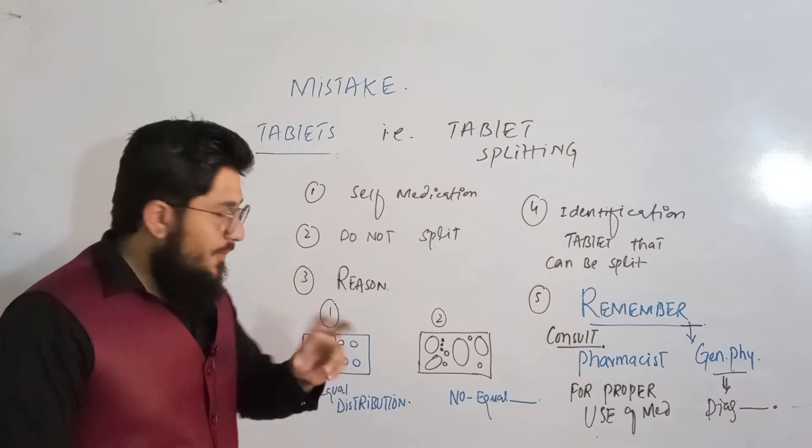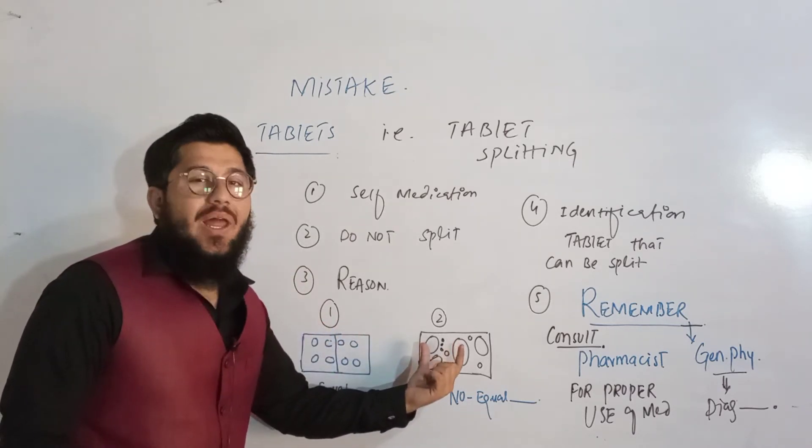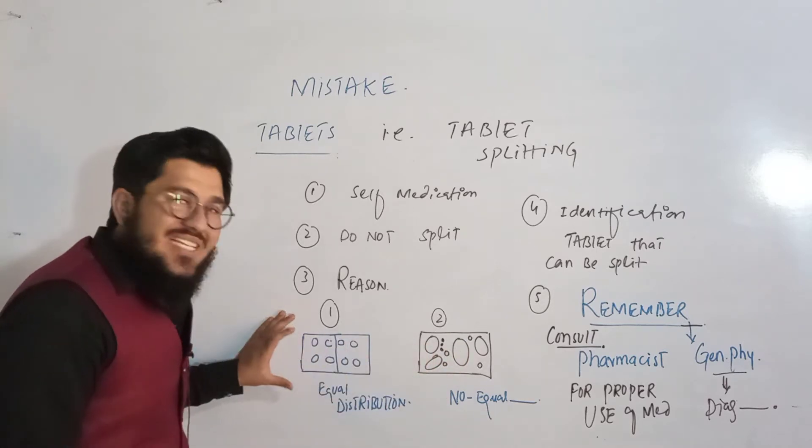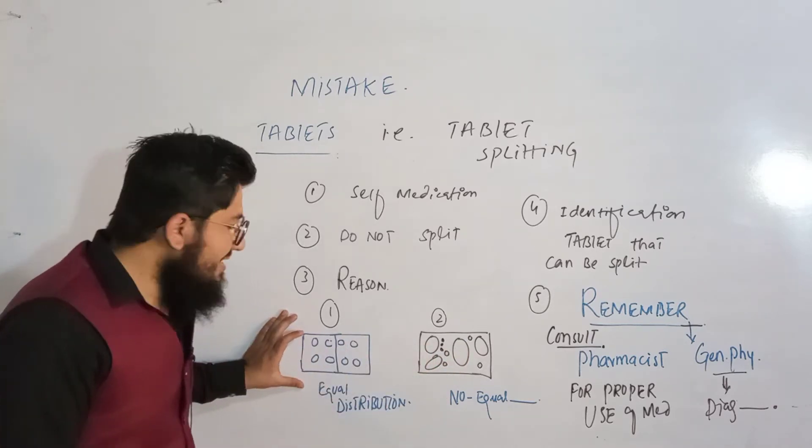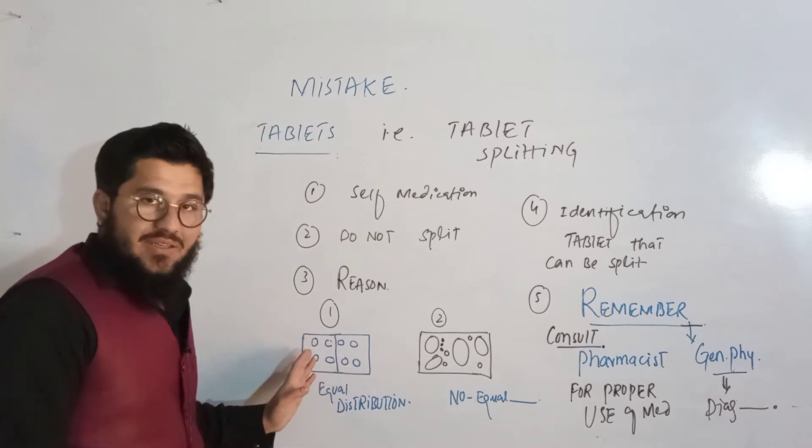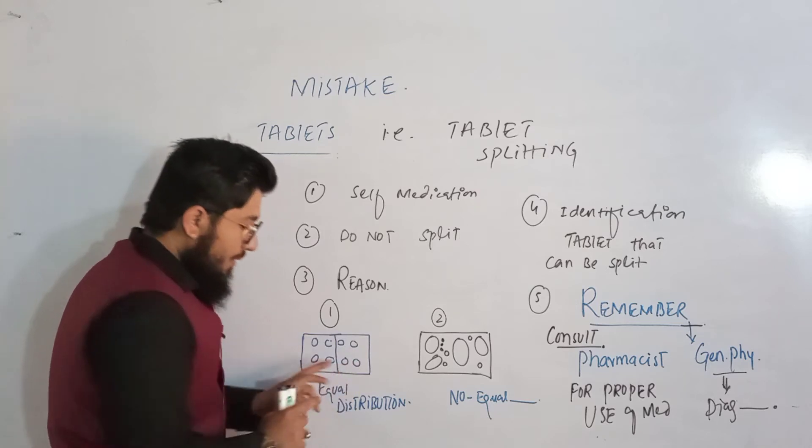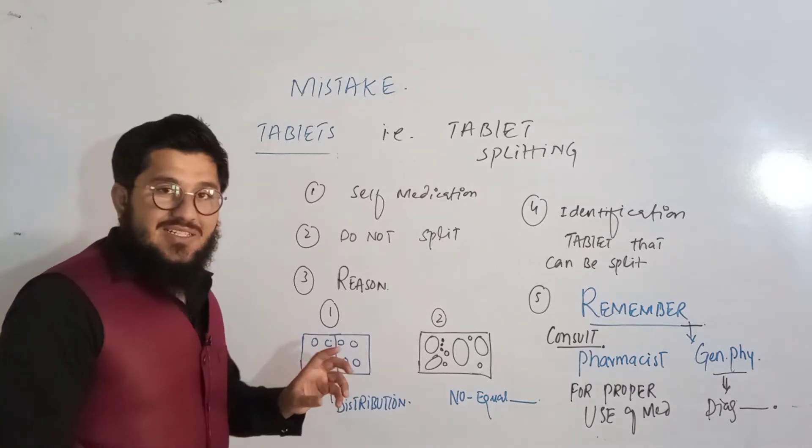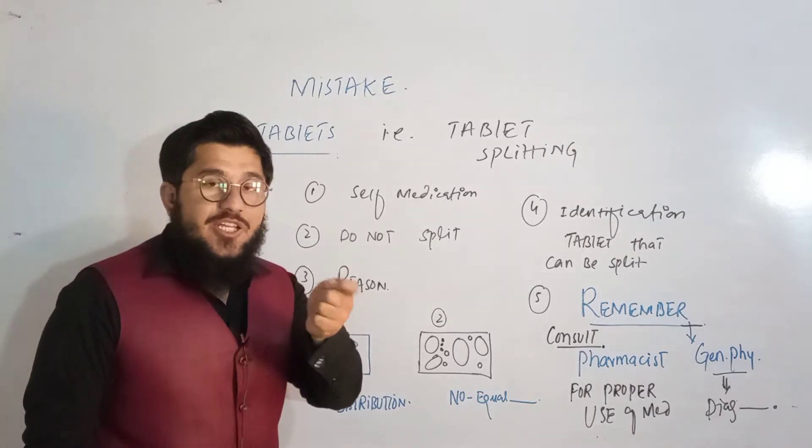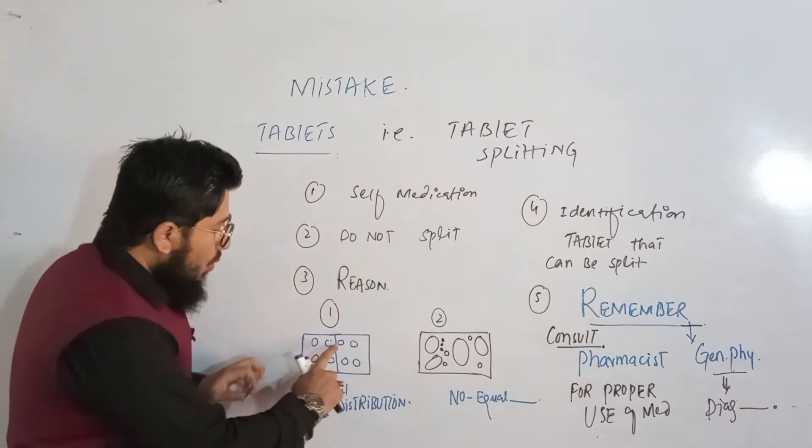You might have seen tablets of two types: one having a score line, another having no line. The one that is having the score line means that this particular tablet has equal distribution on either side. If you talk about the right or left, here on the right side we have one, two, three, four - consider these four circles as chemicals that are actually responsible to treat the particular disease. So here we have one, two, three, four on the right side and one, two, three, four on the left side.